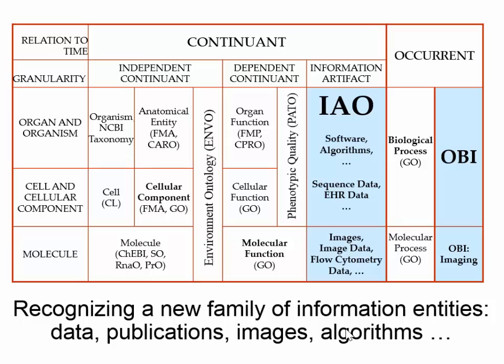The interesting thing about IAO is that it broke BFO, because information artifacts are not independent continuants. My passport is an independent continuant, but the information artifact which is my passport is information content rather than information paper. It's not an attribute of an independent continuant in the way that a quality or a function is, and it's certainly not a process. A publication is not a process — the process of publishing is a process. And so this created BFO 1.1, which added an extra category in addition to the three we had already seen.